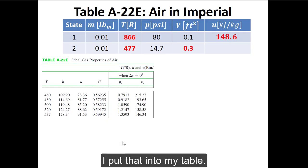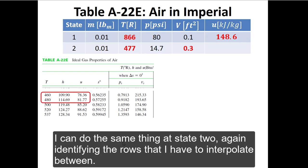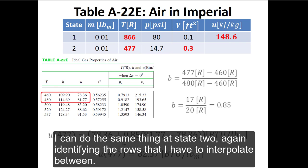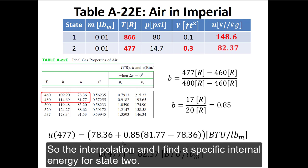I can do the same thing at state two. Again, identifying the rows that I have to interpolate between, do the interpolation, and I find a specific internal energy for state two.